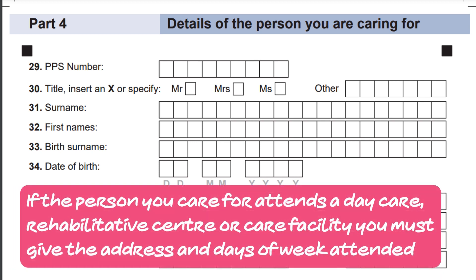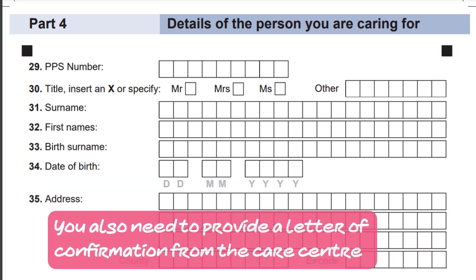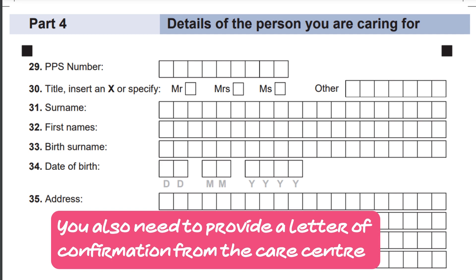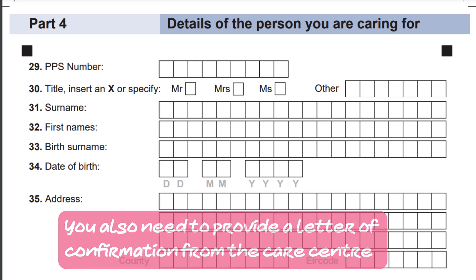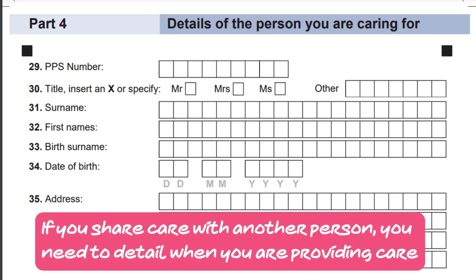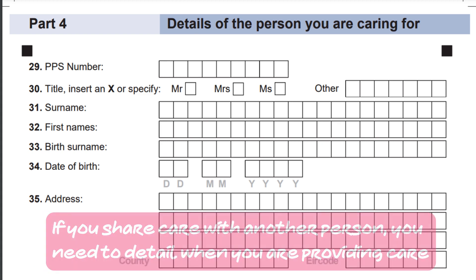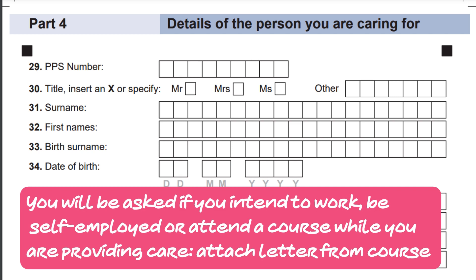You must share how many days a week and how many hours of each day you provide care. If the person you care for attends a daycare, rehabilitative centre, or care facility, you must give the address and days of the week attended, and provide a letter of confirmation from the care centre. If you share care with another person, you need to detail when you are providing care. You will be asked if you intend to work, be self-employed, or attend a course while you are providing care. Attach a letter from your course if you attend one.